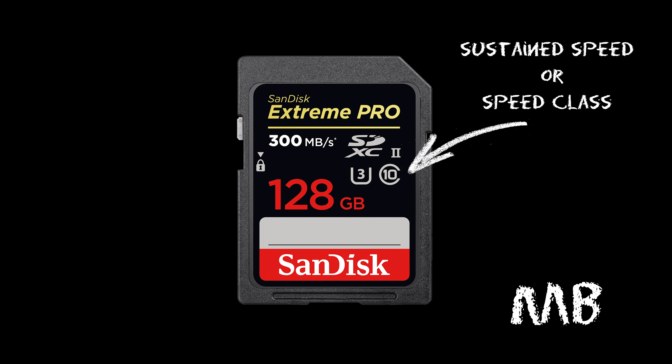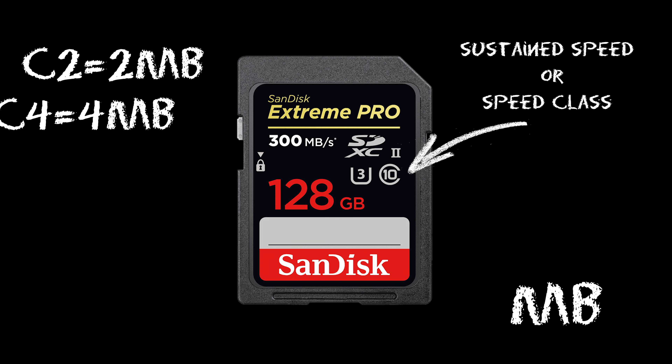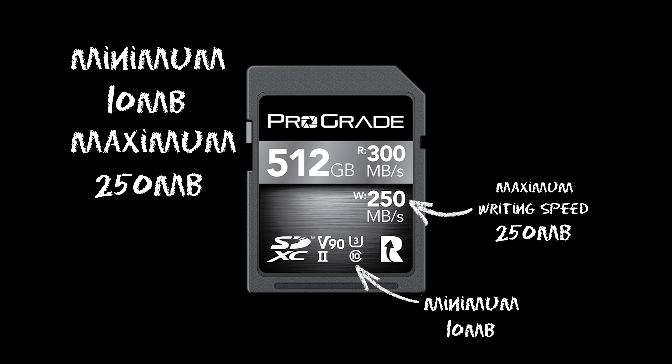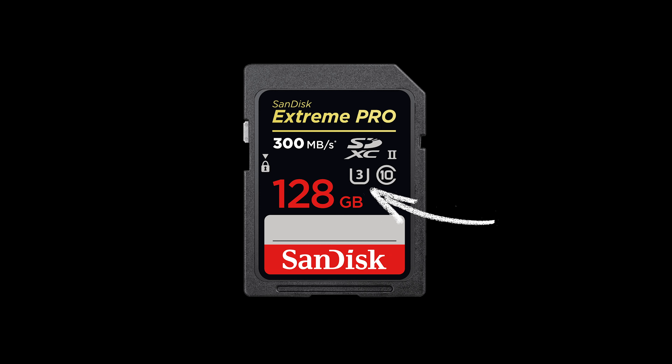The next one is the letter C, which stands for sustained speed, and it's also measured in megabytes. There are four levels: C2, 4, 8, and 10. Most cards now have C10, which is a minimum writing speed of 10 megabytes. The writing speed mentioned earlier stands for the maximum the card can reach — which is 250 megabytes on this card — while the C10 ensures the card won't go lower than 10 megabytes. So the minimum is 10 megabytes and 250 is the maximum.